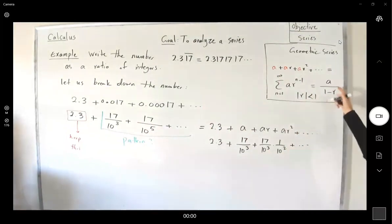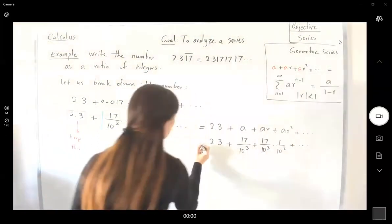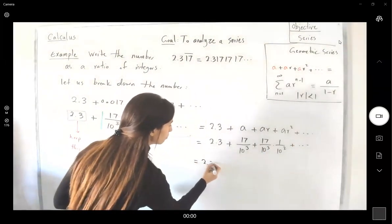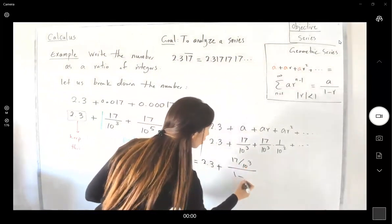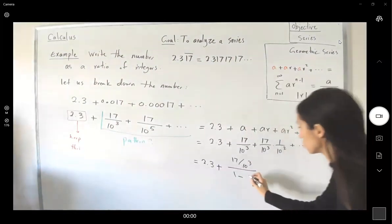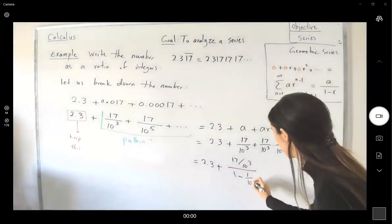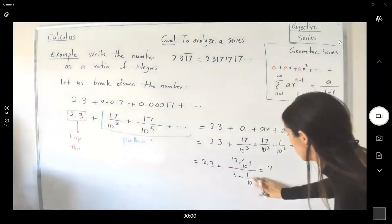I have r and I know the sum. So this can be written as 2.3 plus 17 over 10 to the third divided by 1 minus r, which is 1 divided by 10 to the third. So 10 squared.